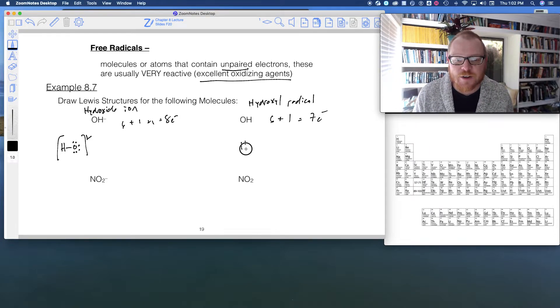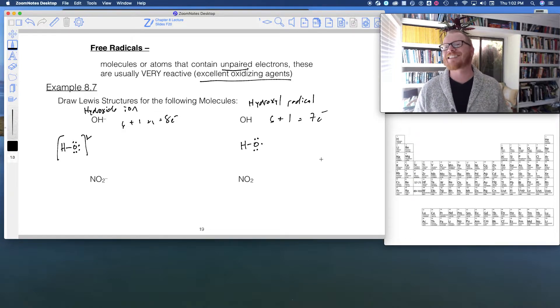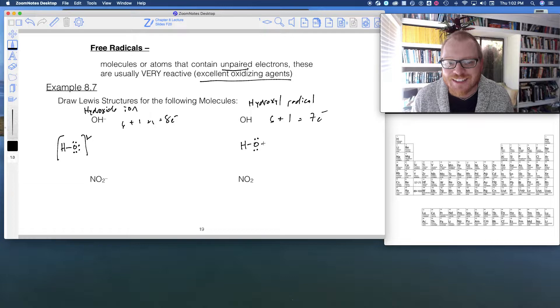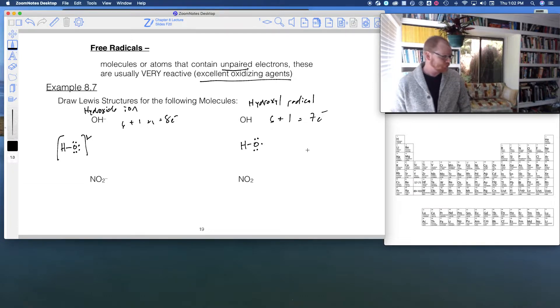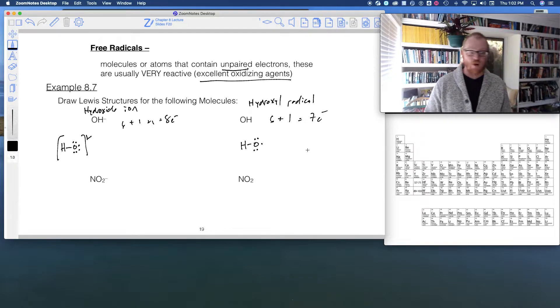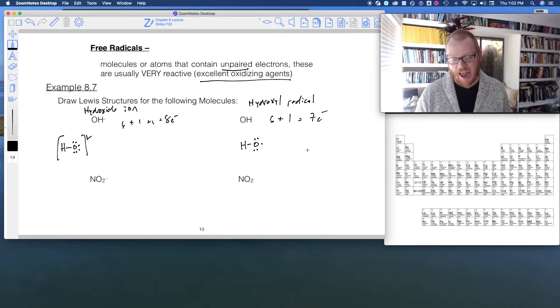So hydrogen is still going to follow the duet rule, but now what happens is, there we go, that oxygen only has seven. Two, four, six, seven. So that's the correct Lewis structure for the hydroxyl radical, and it's extremely reactive. So this thing can strip electrons off of about damn near anything, which causes it to corrode and react away.